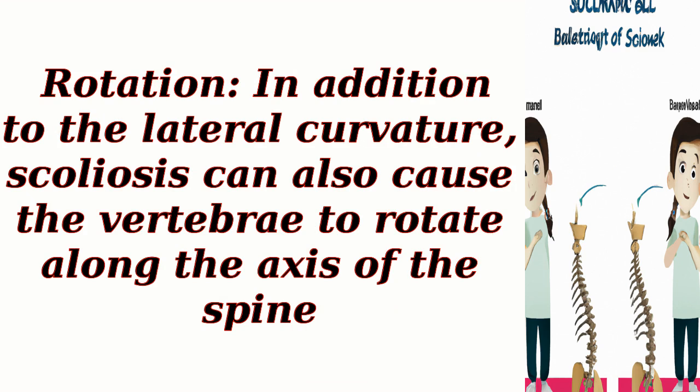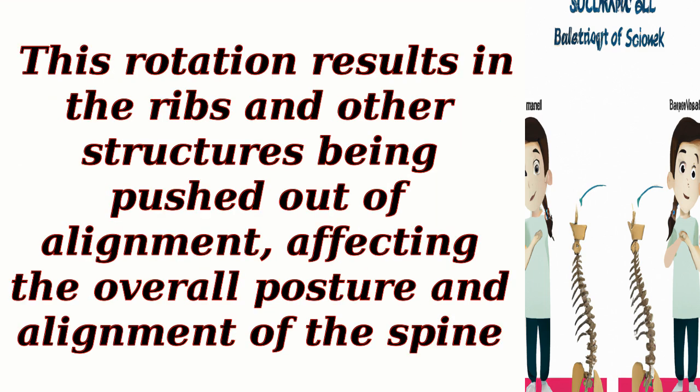Rotation: in addition to the lateral curvature, scoliosis can also cause the vertebrae to rotate along the axis of the spine. This rotation results in the ribs and other structures being pushed out of alignment, affecting the overall posture and alignment of the spine.